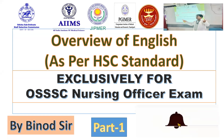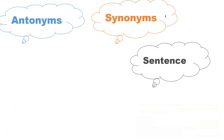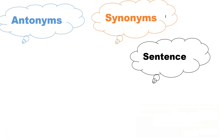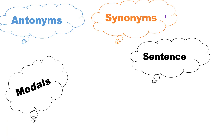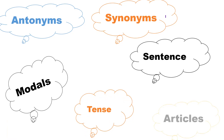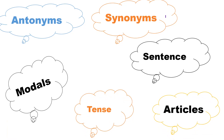Now we will see what are the important topics in English which are exclusively important for the URISA Subordination Staff Selection Commission Nursing Officer. In HSC or 10th standard English, first we will see antonyms, then synonyms, followed by sentence, modals, tense, and articles. These six topics are very important for the URISA SSC Nursing Officer recruitment examination.